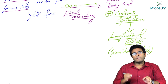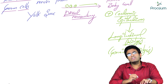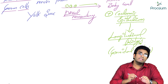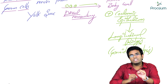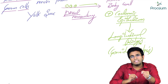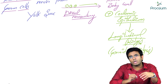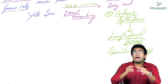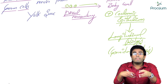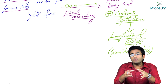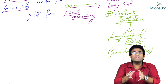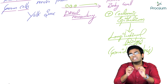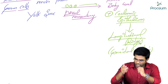So to summarize: the primordial germ cells originate from the yolk sac, travel via the dorsal mesentery to the posterior body wall, and there they stimulate the coelomic epithelium to form longitudinal ridges known as gonadal ridges or genital ridges.